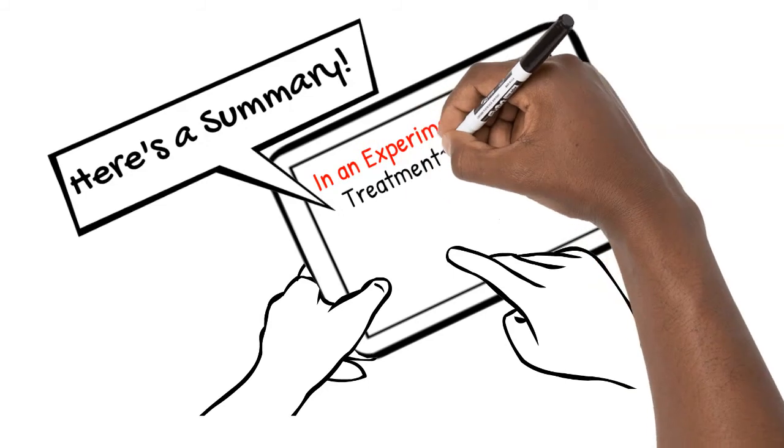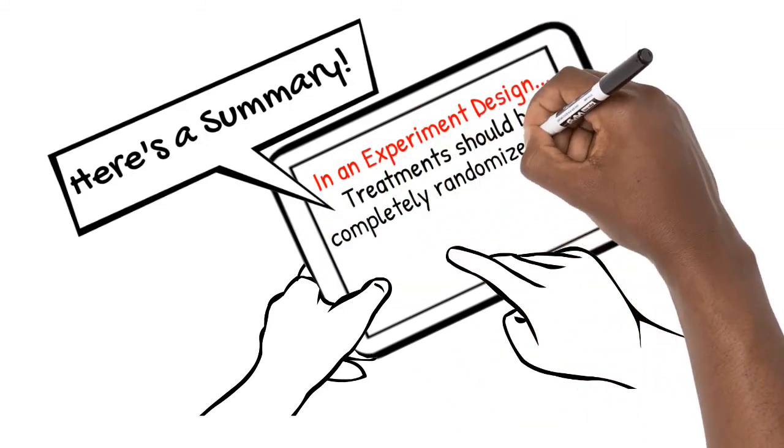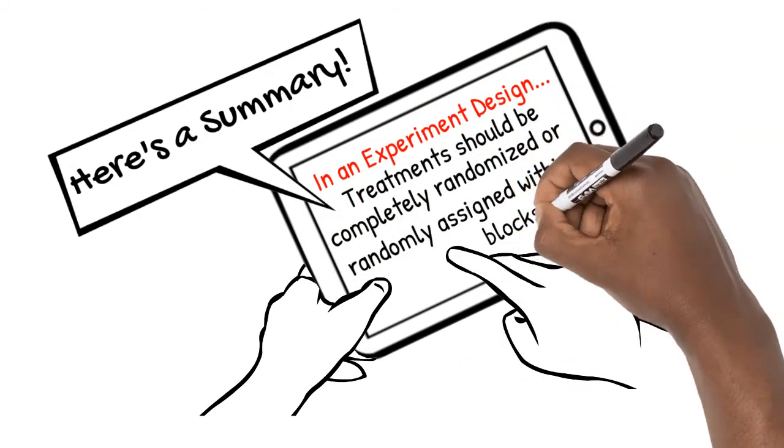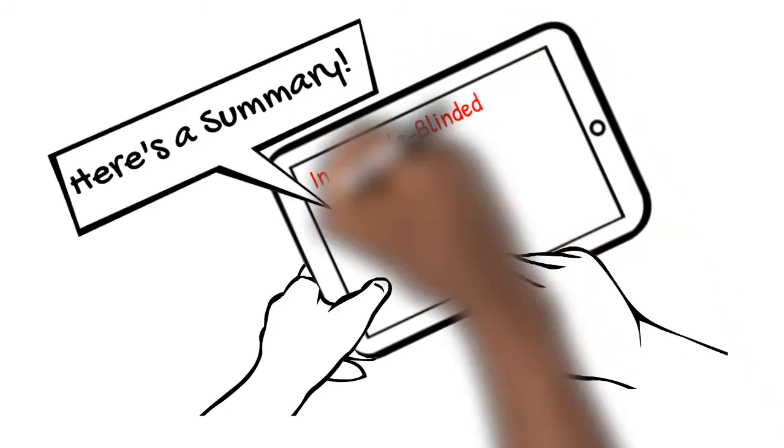In an experiment design, treatments should be completely randomized or randomly assigned within blocks. In a double-blinded experiment, all individuals that might affect or evaluate the outcome are blinded.